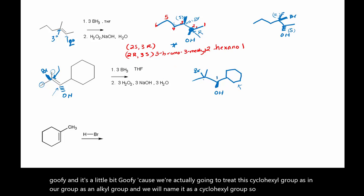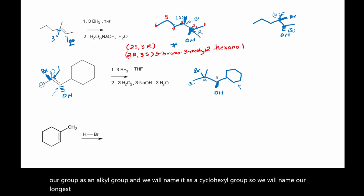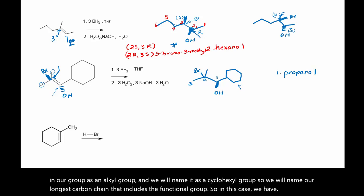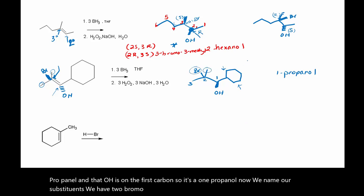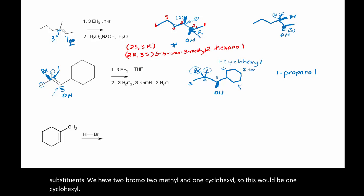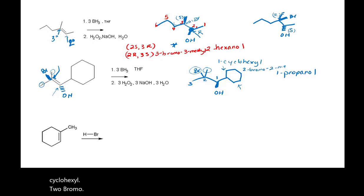So we will name our longest carbon chain that includes the functional group. In this case we have propanol, and that OH is on the first carbon, so it's a 1-propanol. Now we name our substituents. We have 2-bromo, 2-methyl, and 1-cyclohexyl. So this would be 1-cyclohexyl-2-bromo-2-methyl-1-propanol.